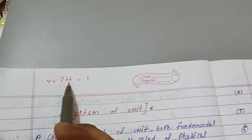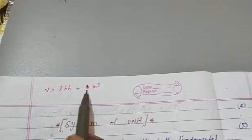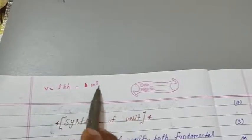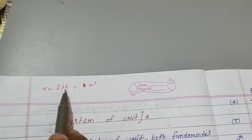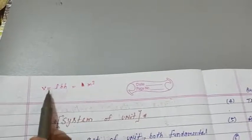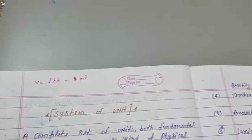अब length को measure करते हैं L में means meter में. B को, B भी हमारी width क्या है, meter में. और इसको भी meter में. तो इसका unit हो गया meter × meter × meter, meter cube. और यह length, length, length है. Length is a fundamental quantity है. Volume क्या हुआ? LBH means L cube और meter cube. तो length, length से तो volume क्या, एक derived unit है.